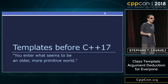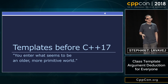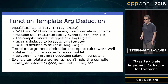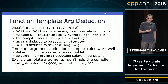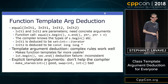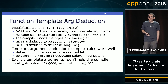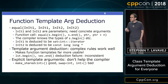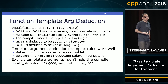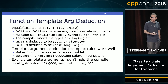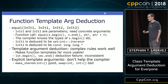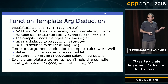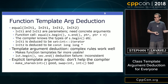Let's rewind to before C++17 — anywhere from C++98 to C++14 — and ask what did we do with templates before then. Let's start with function templates. You can write a function template; here this is the C++14 dual range equal overload. This is templated on a couple of input iterators, InIt1 and InIt2. These are parameters. We need to know the concrete argument types in order to instantiate actual machine code that will be executed on the processor.